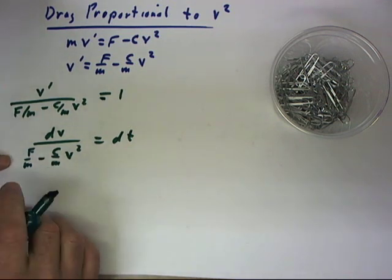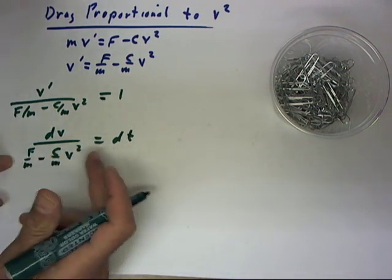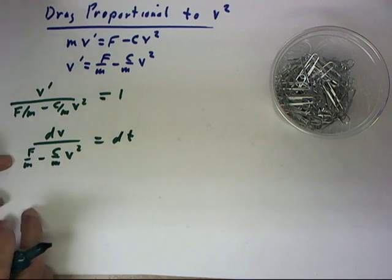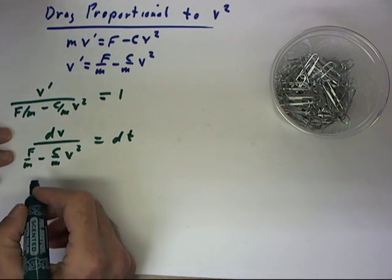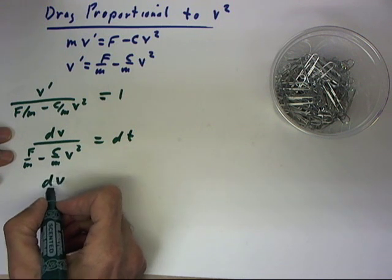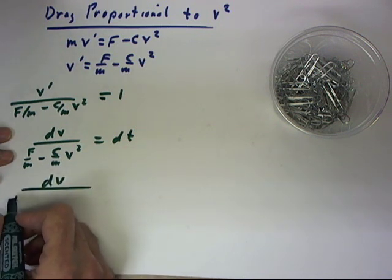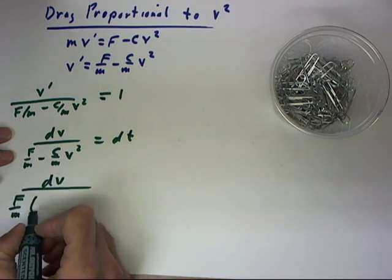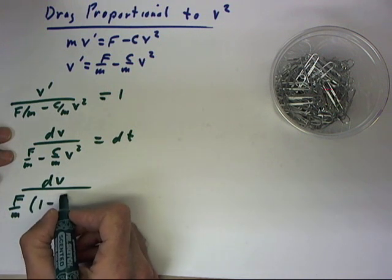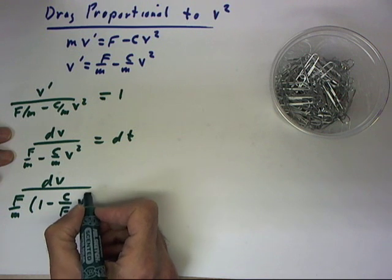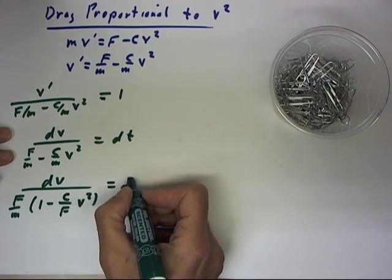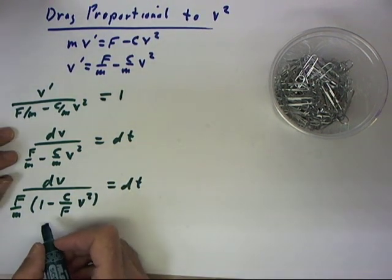I'm going to simplify it a little bit so that it has a coefficient of 1, and we do that by factoring out f/m. We obtain dv divided by f/m times (1 - c/f v²) = dt, giving